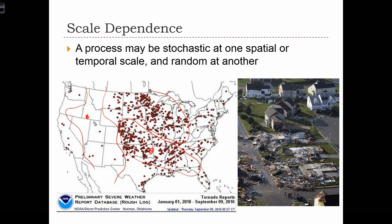But what happens when we actually zoom in to one of these towns where we know a tornado might occur? Are we able to say with any certainty where the tornado will actually touch down? The answer is no. Despite all of our knowledge of the processes that form tornadoes, we can't predict which house or which street is going to get damaged when we zoom in to the scale of a city. We call that scale dependence, because the probabilistic nature of the process differs when looking at the national level versus the urban level.